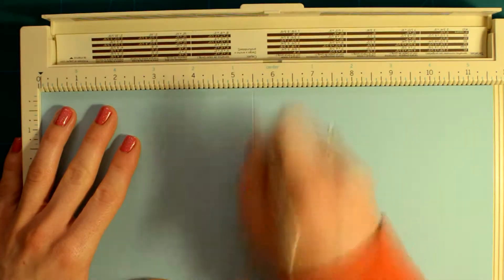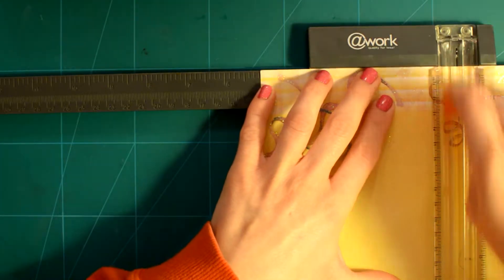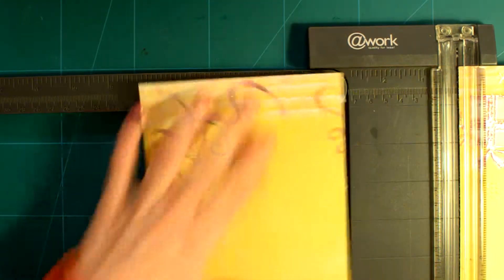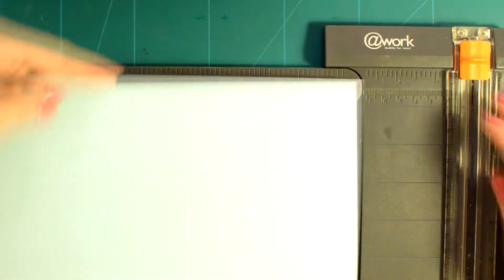I start by scoring my card base which is 5 and 3/4 by 6 inches and then cutting 1/8 of an inch less the DSP I chose for this card.